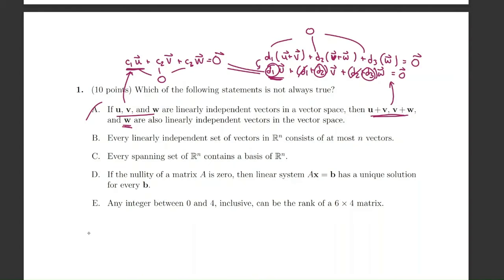Part b: every linearly independent set of vectors in some vector space has at most n vectors, where n is the dimension of the vector space. This is true because the basis for R^n consists of n vectors. If you have more than n, you can write at least one as a linear combination of the basis vectors, so at most n vectors are needed to retain linear independence. This is true.